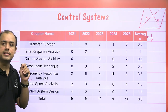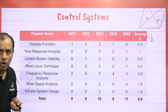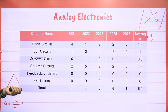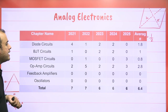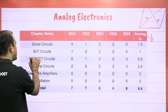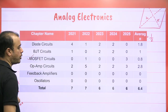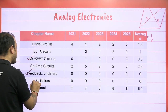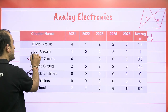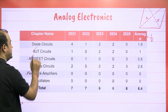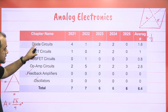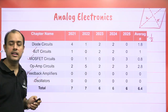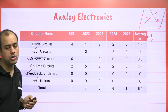In Transfer Functions, if you can prepare just Signal Flow Graph, you can solve all questions. In Analog Electronics, Electrical students can skip MOSFET, Feedback Amplifier, Oscillator, and even BJT. Just complete Diode Circuits and Op-Amp and your Analog will be good.